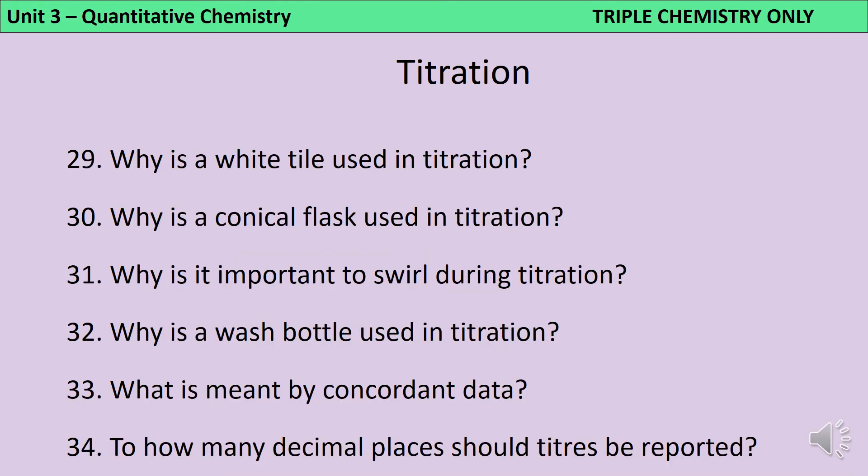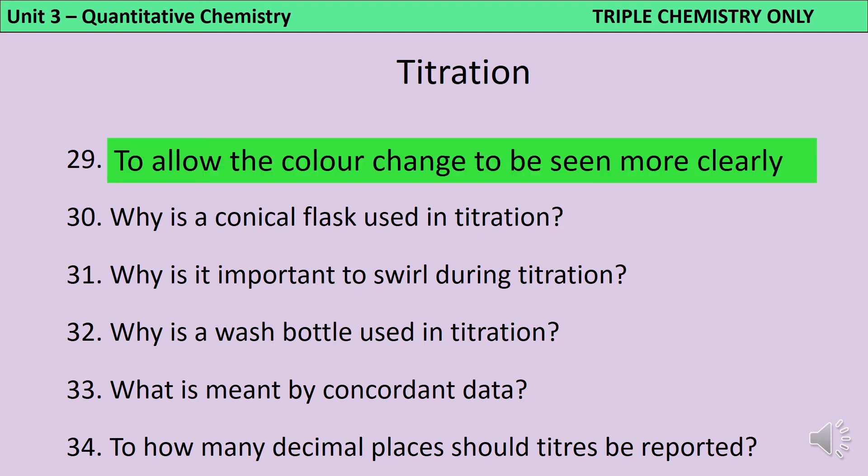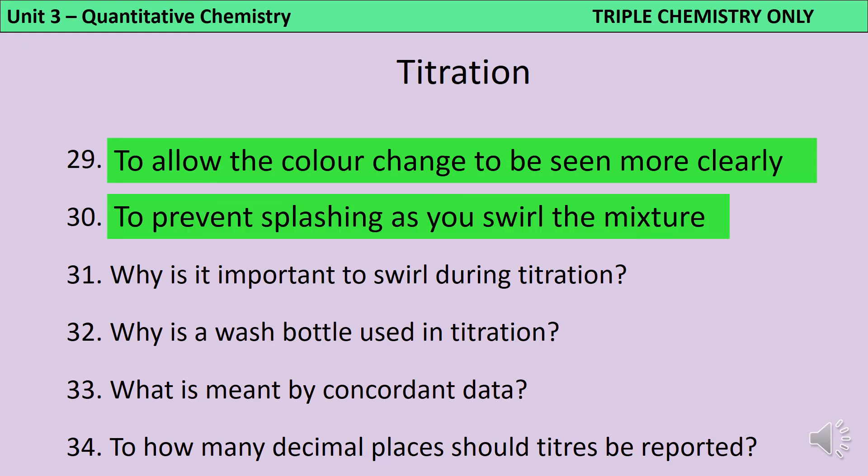When doing titration, we use a white tile to allow you to see the indicator changing colour more clearly. The conical flask is used so that you can swirl your solution without risking any of it splashing out. And it's important to swirl because if you don't, then you might have different areas of that solution that have different concentrations. We're trying to homogenise the solution.